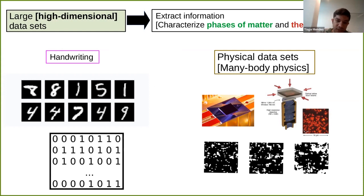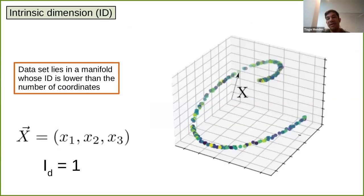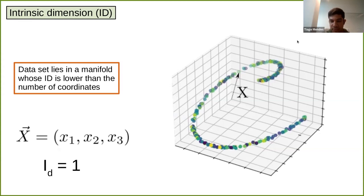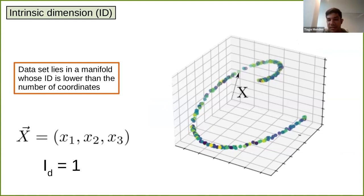One feature of datasets we are interested in studying is called intrinsic dimension. Let me give you an idea of what that is, starting with a synthetic dataset with three coordinates. I can sample a probability distribution and obtain this dataset. The idea of intrinsic dimension is that, despite this dataset being embedded in a space with three dimensions, I can lay it down on a manifold with effective dimension equal to one.